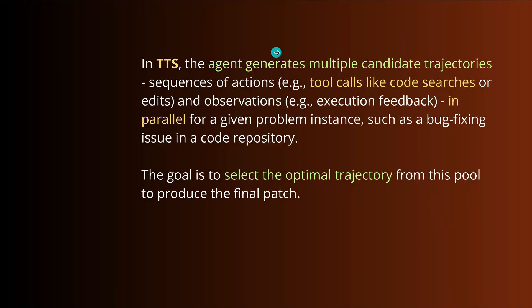So in TTS, the agent generates... by the way, I know some of you might say, hey, this is text to speech. No, text to speech is text numerical to speech. So current notation - all the university know. TTS is test time compute inference. The agent generates multiple candidate trajectories. We go with 16 in parallel for any given problem instance. Whatever you go, bug fixing, code repo, whatever you have. And now we have the task only 16 trajectories, but we have to select the optimal trajectory for our coding agent. How to do this?